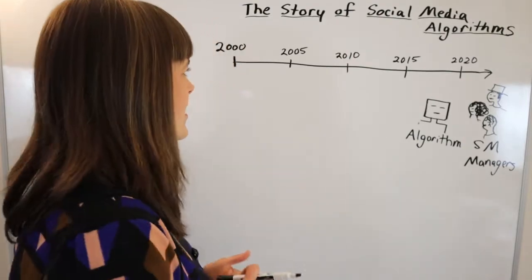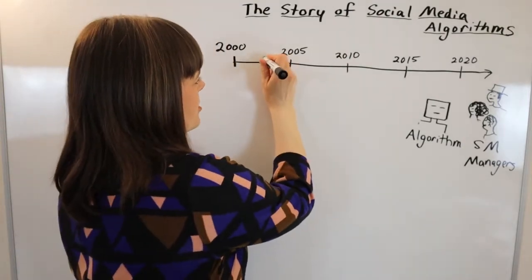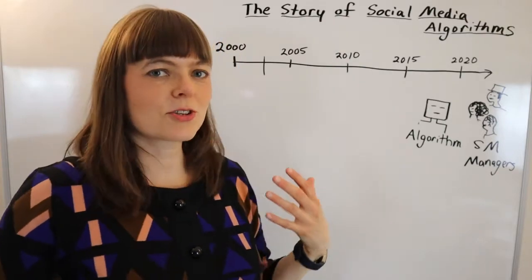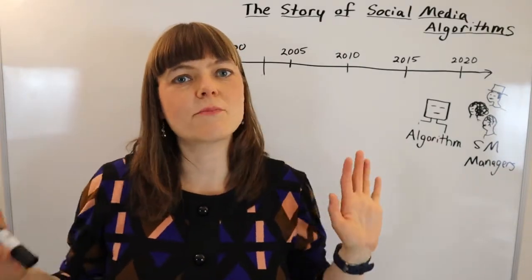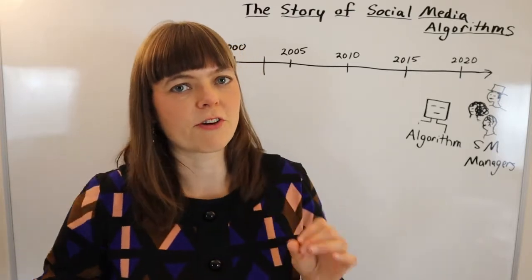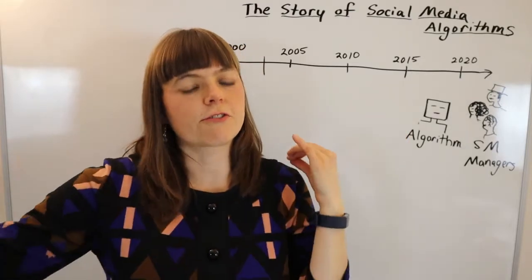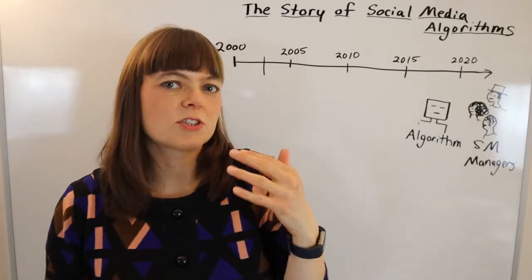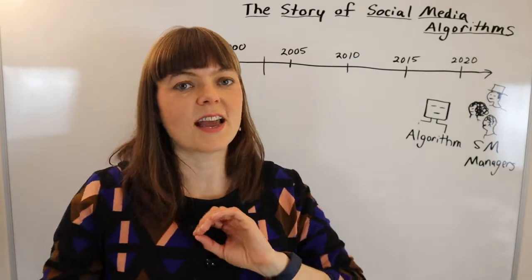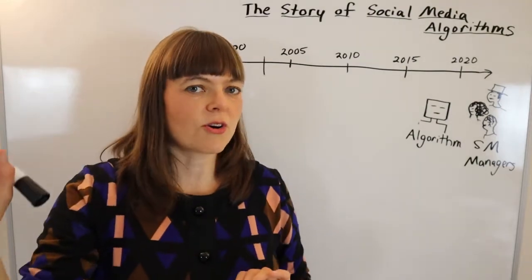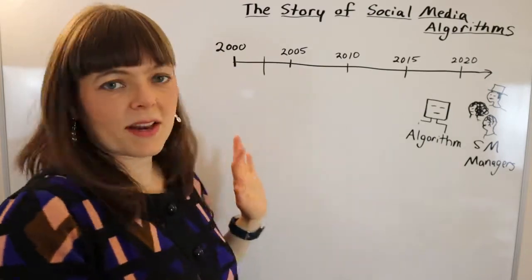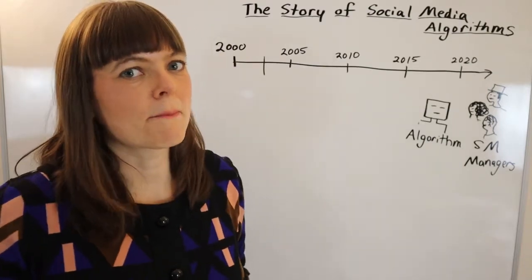The first part of this story is that when social media first arose, there was no such thing as an algorithm. Social media was literally just a way of presenting information that connected you with your friends. You could post your page and friend other people, but there was no feed of information, no algorithm deciding which content to prioritize and which content to suppress. In the beginning there was only the social media managers.